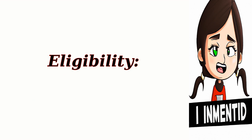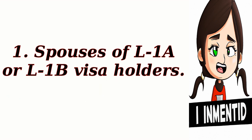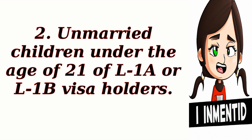Eligibility: The L-2 dependent visa is available to the immediate family members — spouse and children — of L-1 visa holders. This includes spouses of L-1A or L-1B visa holders, and unmarried children under the age of 21 of L-1A or L-1B visa holders.